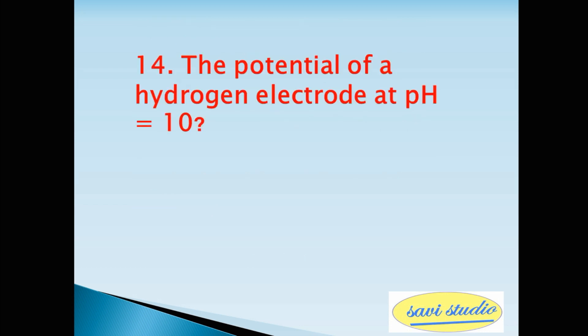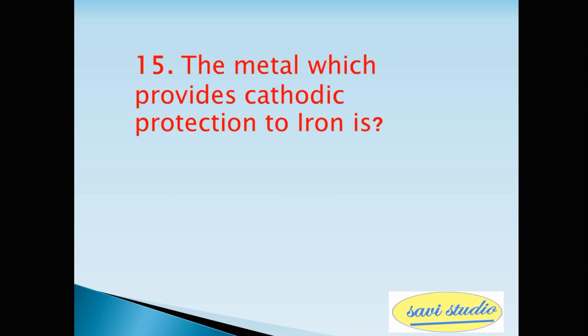Fourteenth question, the potential of a hydrogen electrode at pH equals 10? Answer minus 0.59V. Fifteenth question, the metal which provides cathodic protection to iron is? Answer Zinc.